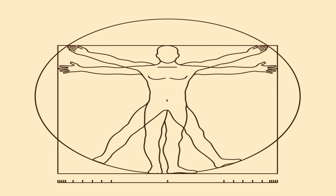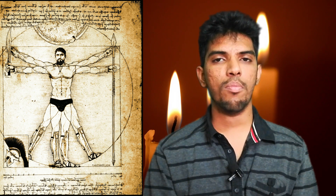The Vitruvian Man shows a man at the tip — a circle is drawn around him, and he overlaps a square matching the overall height of the man. There is a circle and a square, and the two overlap. This is the main concept of the Vitruvian Man.